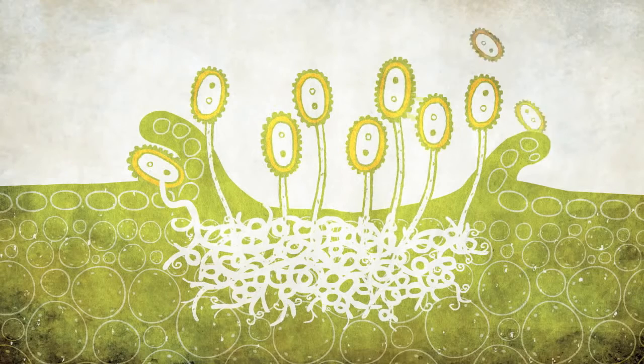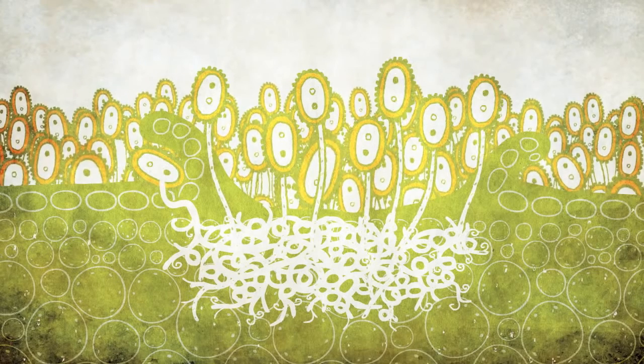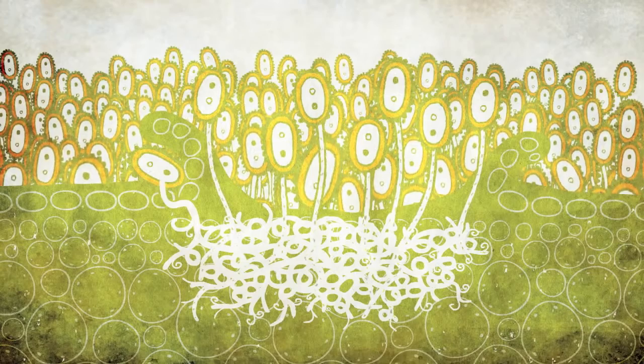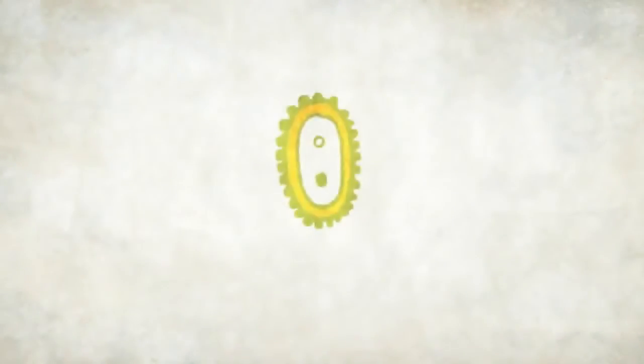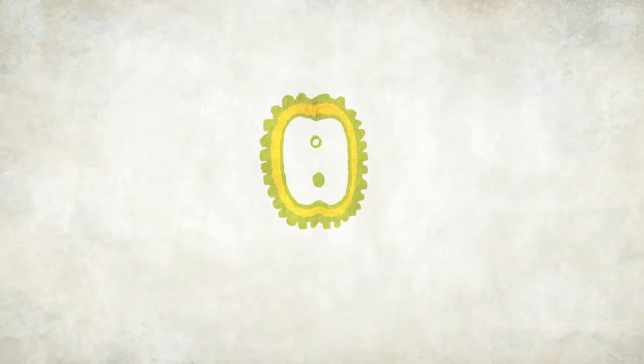An important point about the uridinia spore cycle of infection is that it is a clonal method of spore production. Random mutations, genetic copy errors, and potentially rare cases of asexual hybridization aside, uridinia spores infect wheat tissue and produce exact copies of themselves.